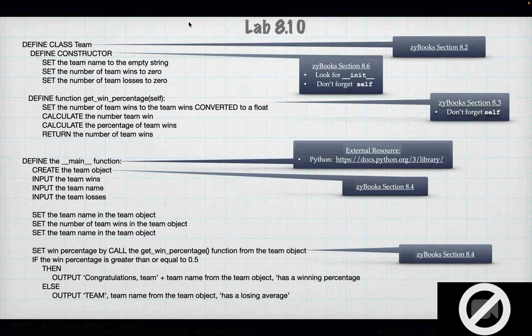This one we're going to have a team object. We're going to create a constructor — every team has a name, a number of wins, and a number of losses, and we're going to initialize the number of wins and losses to zero. Then we're going to say get_win_percentage: calculate the percentage of wins based on number of wins and number of losses. I'm going to create a main function, create a team object, get as input the name of the team, the wins, and the losses. I'm going to set the team name, set the number of team wins, set the number of team losses. Then I'm going to calculate the win percentage, and if it's greater than 0.5 output congratulations, otherwise output that the team has a losing average. These are very much like what we did for the time class.